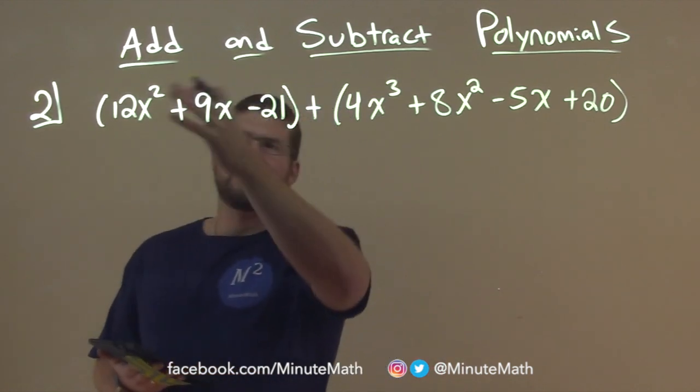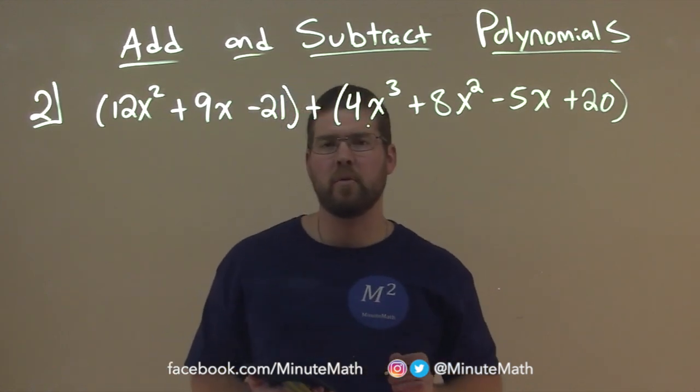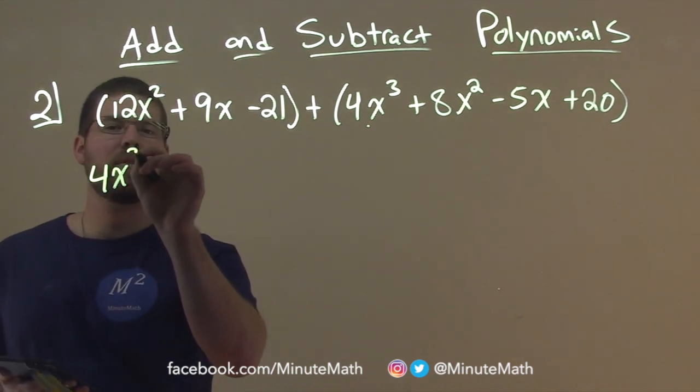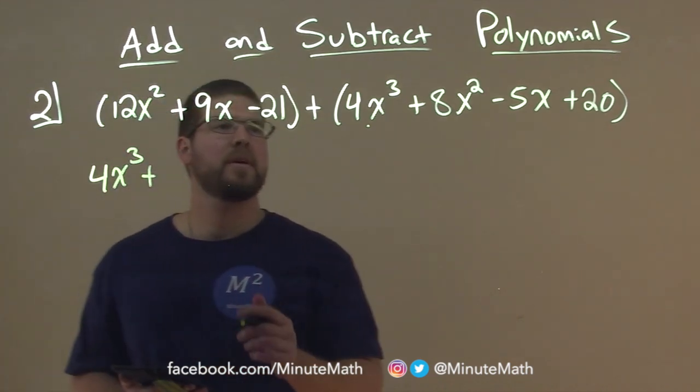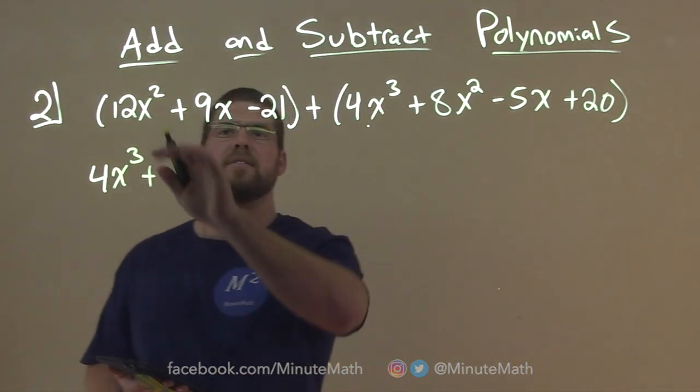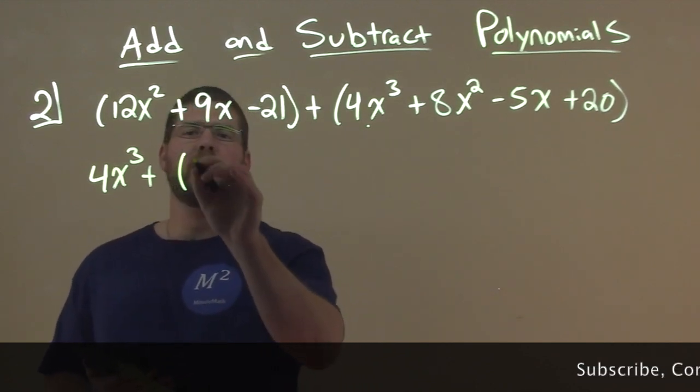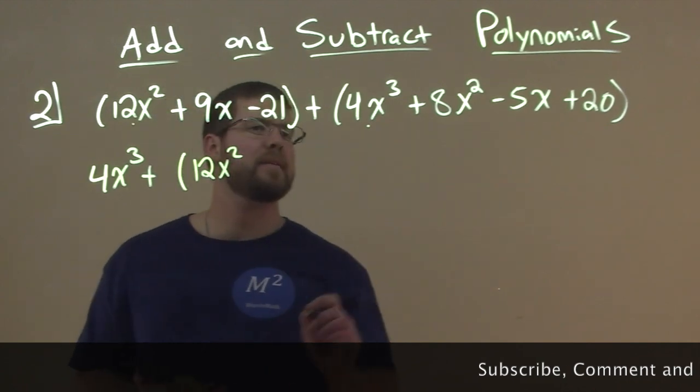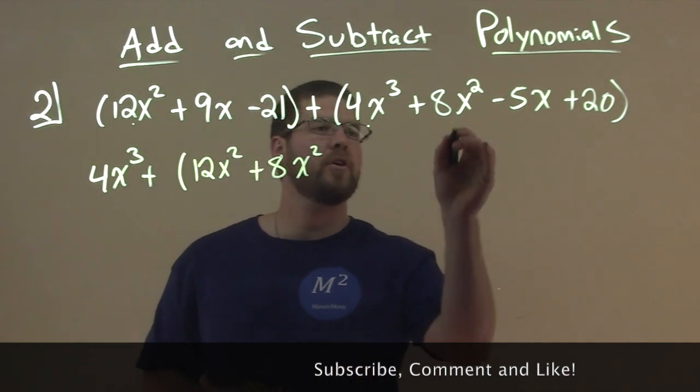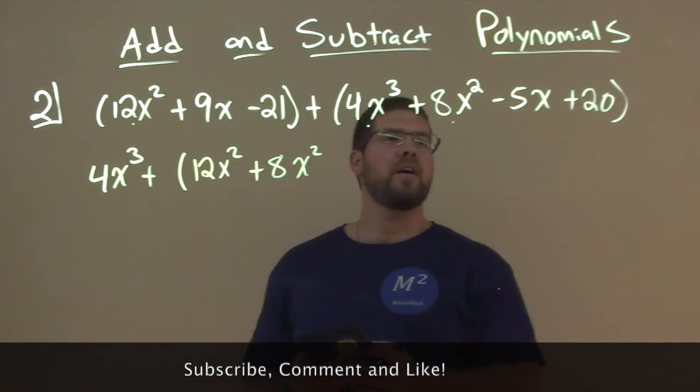Let's start going through. Highest degree I see is to the third power right here. I'm going to put a dot below 4x to the third to signify that I'm bringing it down here. So 4x to the third power, plus now let's deal with all the x squareds. There's no other x to the third. I see two x squareds, and to make it easier I'm going to put parentheses here. We have 12x squared, brought that down. We have another 8x squared plus 8x squared. Make sure you're bringing the whole term down. There's nothing else with squareds.